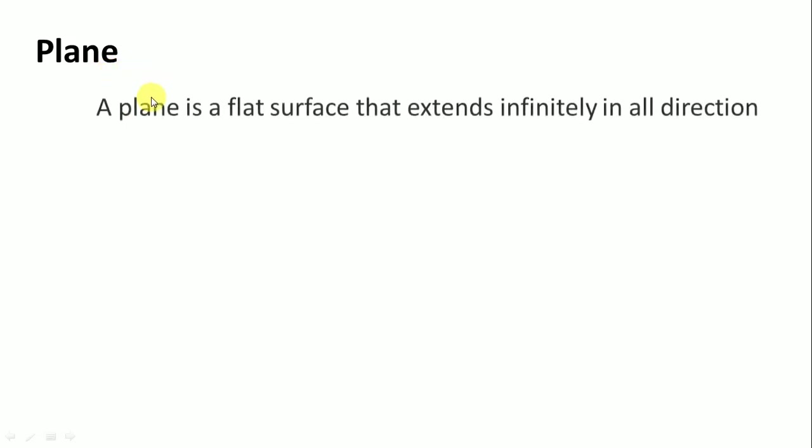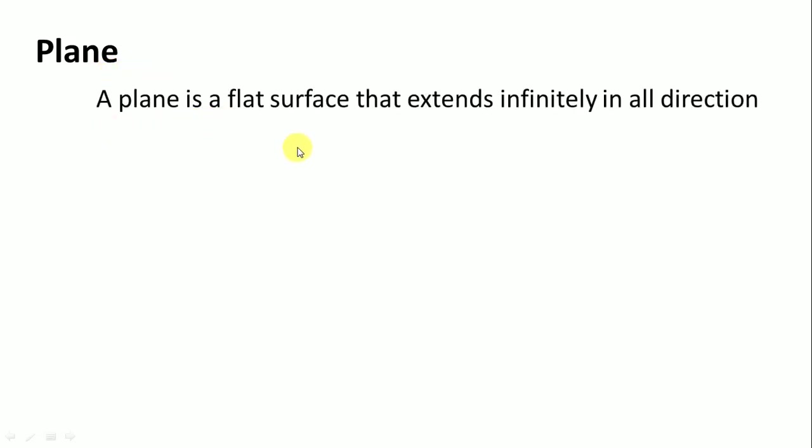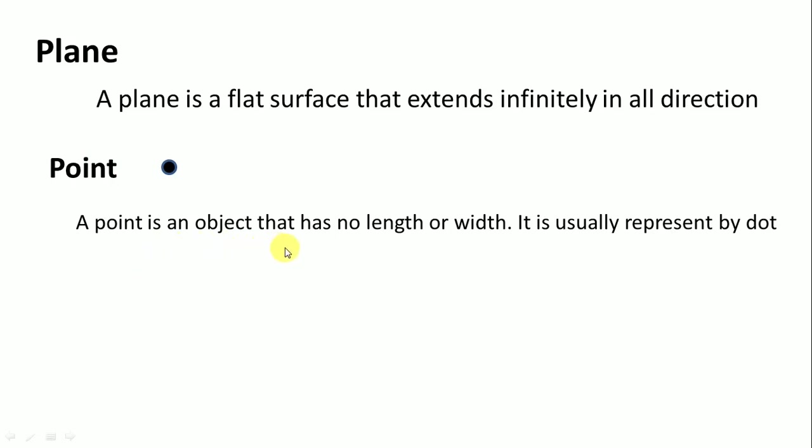First is plane. What is plane? Plane is a flat surface that extends infinitely in all directions. Next is point. A point is an object that has no length or width. It is usually represented by dot. Like this.